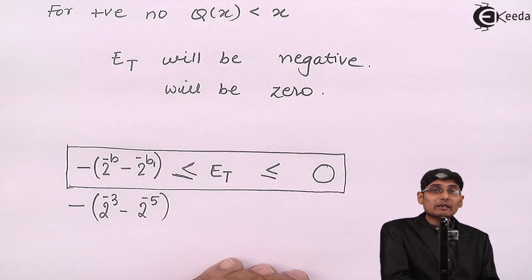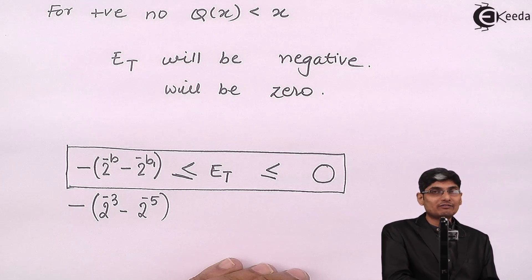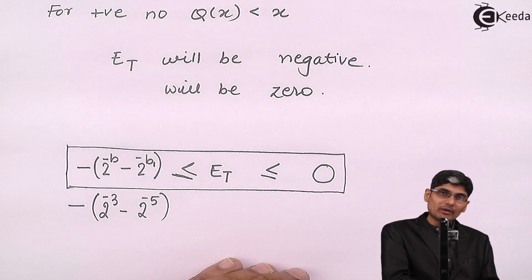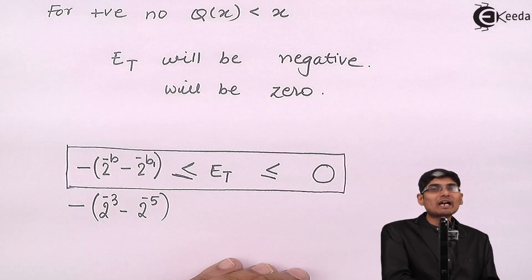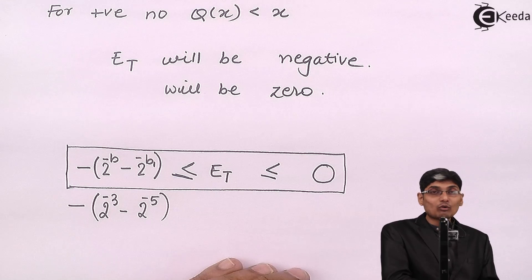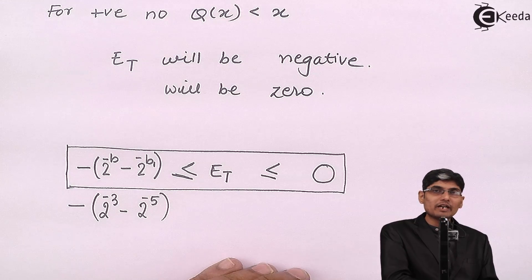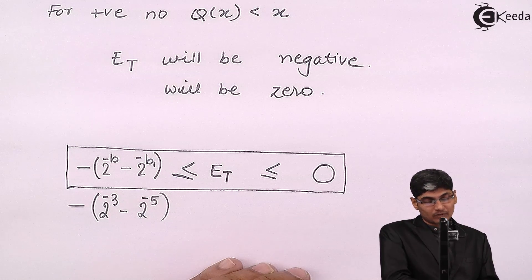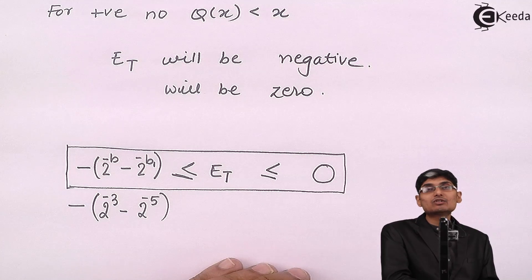So this is the effect of truncation on a positive number. We have seen what truncation means, how we segregate the truncation effect on various types of numbers and formats, and how to quantify the error for a fixed-point fractional positive number.